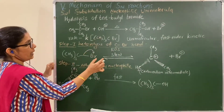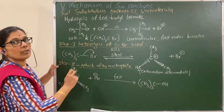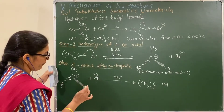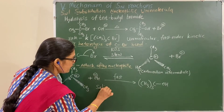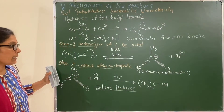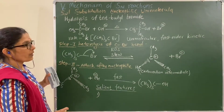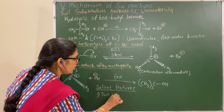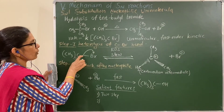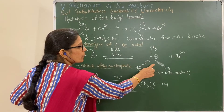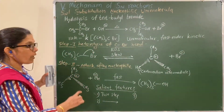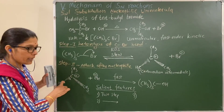The first step is the slow, rate-determining step — the rate depends only on tert-butyl bromide. Now let us consider the salient features of this mechanism. First, it is a two-step mechanism. Second, in the first step, a planar carbocation intermediate is formed.